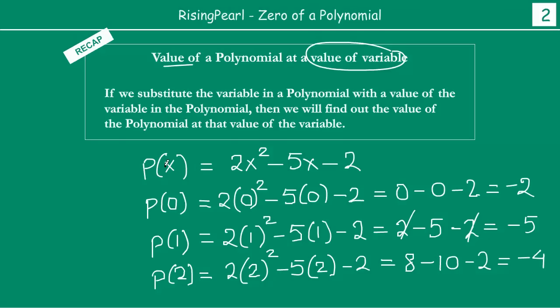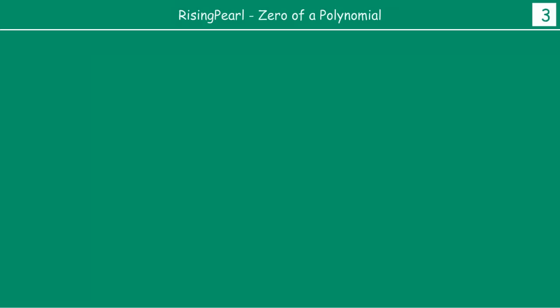So now similarly maan lete hain at x is equal to 2, iski value kitni ho gi, aaye check karte hain. So it will be 2, x ke jagah hum replace karte hain with value 2 square minus 5x minus 2. So then now 2 square is 4, 2s are 8, ye ban gayi aap ki 8 minus 5, 2s are 10 minus 2. So ye ho gayi aap ki 8 minus 10, so aap ki minus 12 and 8, so this is actually minus 4. So hum ne dekha ki ye jo hamari polynomial thi, this polynomial, different values of x ke liye, at x equal to 0, x equal to 1 and x equal to 2, hamay different different values mil rahi hain for the polynomial, right?